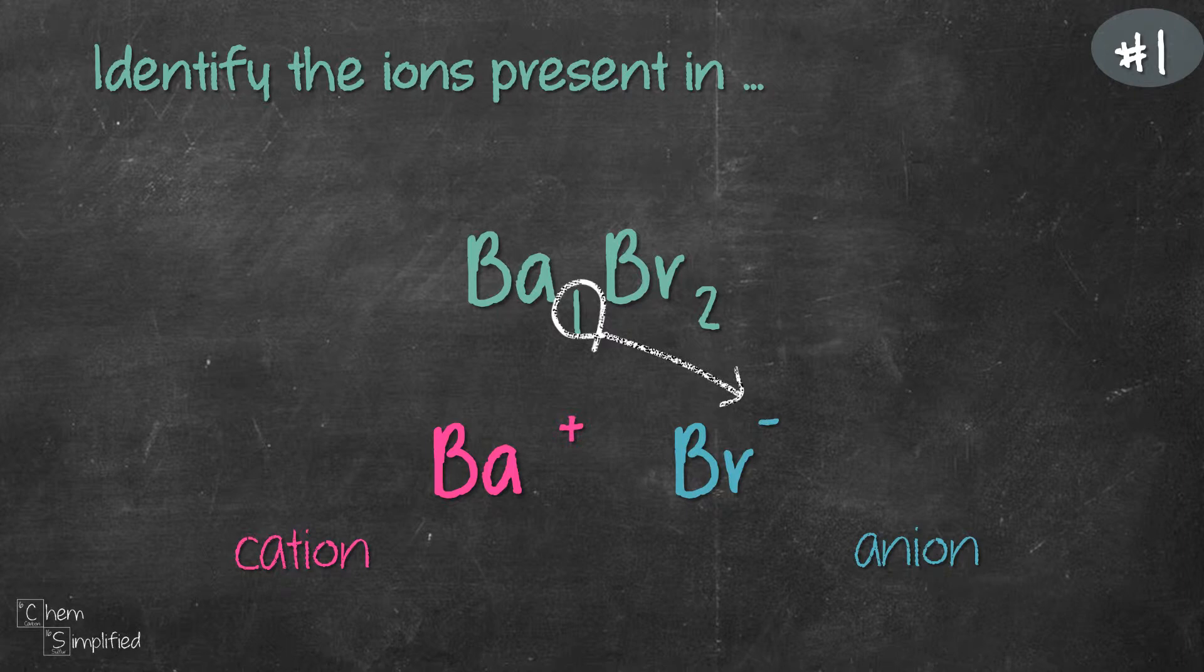Since it's 1, we don't have to write it out. So our anion is going to be Br-. The 2 from bromine will cross over to Ba and that will give us the charge. Our cation is now Ba2+.